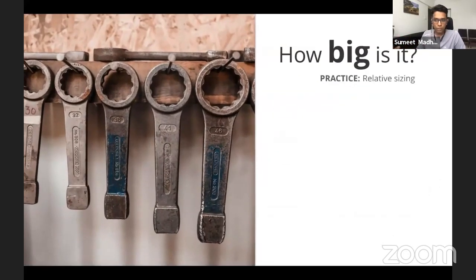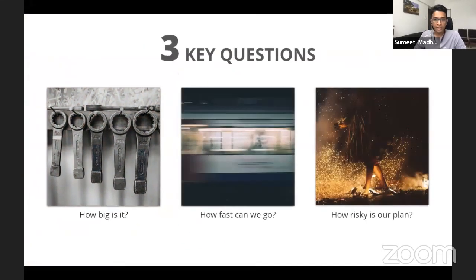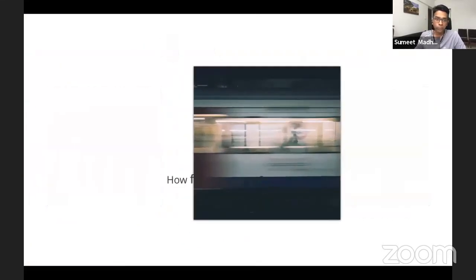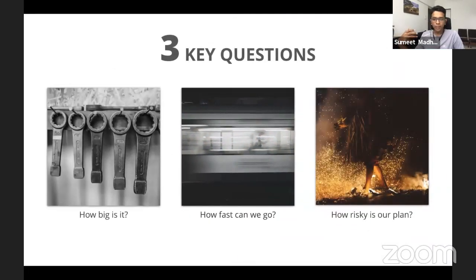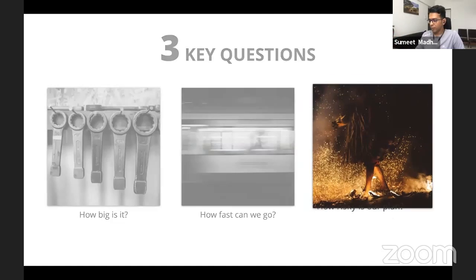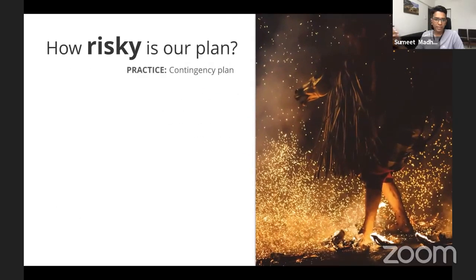We try to answer these with three different kinds of tools or practices. On most agile projects, we try to answer the 'how big is it' question with relative sizing, and we'll mostly do it with story points. The second question is how fast can we go, and the practice we'll introduce for that is the velocity game. And then last but not least, there is the question of how risky is our plan, which we'll answer with the practice of contingency planning.